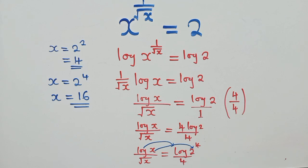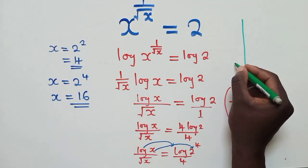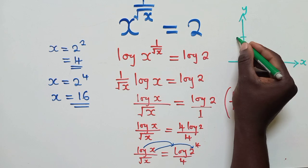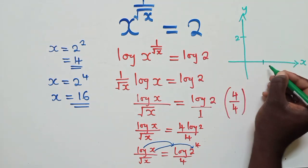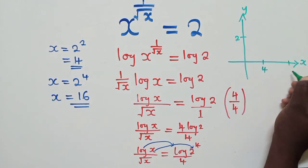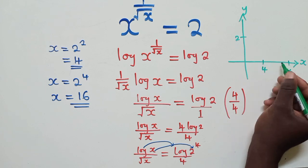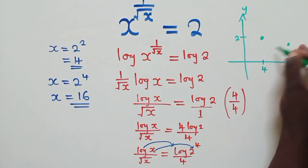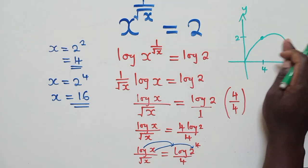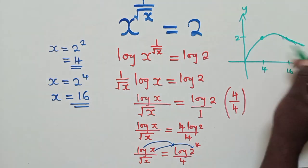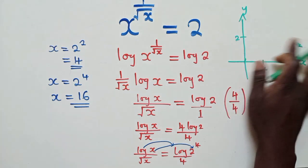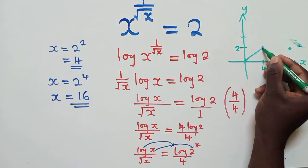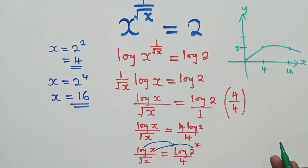If you're not sure of the solutions, you can use a graph to verify. Draw the x-axis and y-axis, place 2 on the y-axis since that is the solution value, then mark 4 and 16 on the x-axis. When you graph the function, it passes through both x equals 4 and x equals 16.